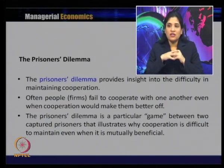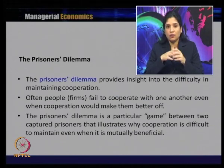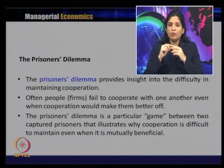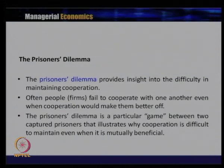Often people, or when it comes to oligopolist firms, they fail to cooperate with one another even when cooperation would make them better off. Prisoner's dilemma is a particular game between two captured prisoners that illustrates why cooperation is difficult to maintain even when it is mutually beneficial. When they were captured by the authority, they knew that cooperation would help them, but it is always difficult to maintain cooperation and finally they land into a situation which is suboptimal.